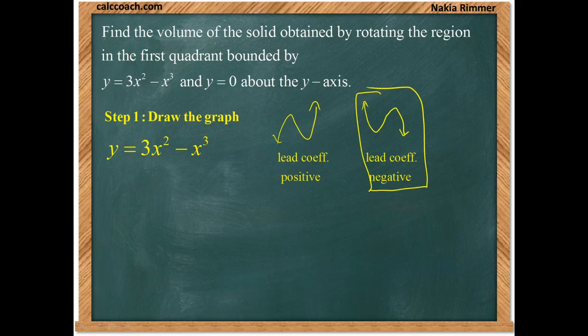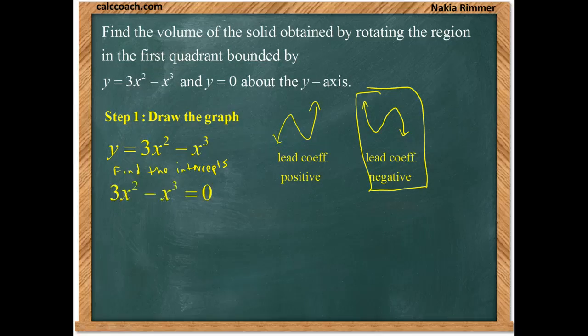To understand more about what the graph looks like, what we need to do is to find the intercepts. Let's find the x-intercepts, and so that requires us to set it equal to zero. Usually solving a cubic is an involved process, but we are missing the constant term, and so that makes things easier.